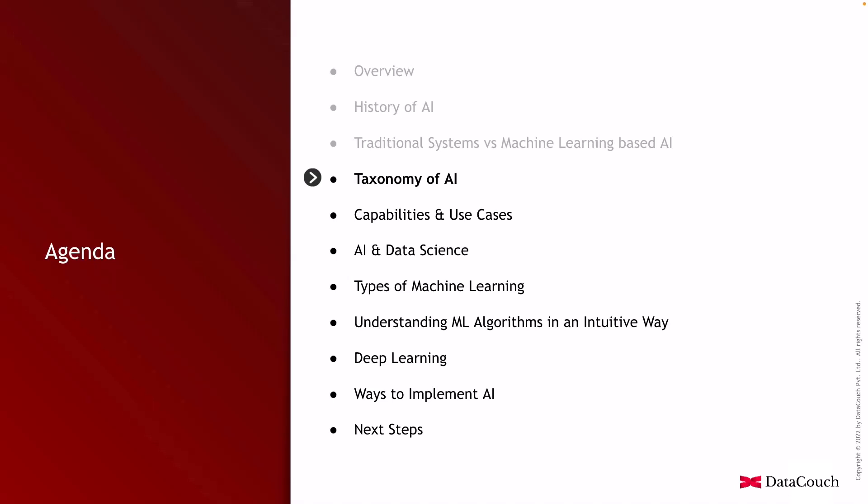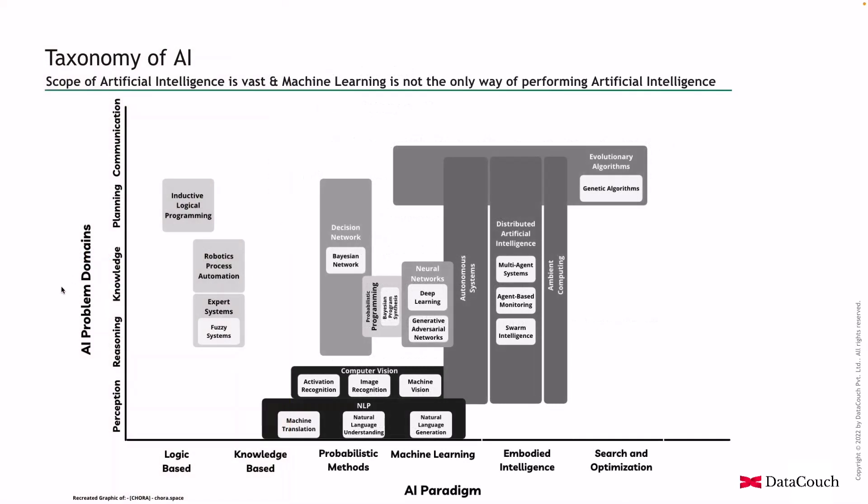Let's look into the taxonomy of artificial intelligence. AI is a very vast topic, and in order to grasp its complexity and depth, it is important to have a picture — a graphic — through which we can understand its architecture and gain a holistic perspective around artificial intelligence.